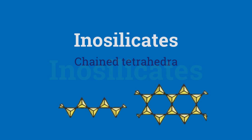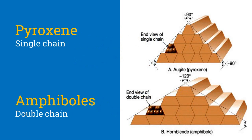Coming over to inosilicates. When the silicon tetrahedrons are linked in a chain, whether singly or doubly, then the mineral is called an inosilicate. Pyroxenes and amphiboles are inosilicates, but pyroxenes consist of a single chain, whereas amphiboles are made up of 2 chains. This difference also causes them to have different cleavage, which is an important property for identifying pyroxenes and amphiboles.